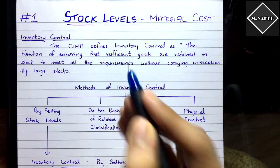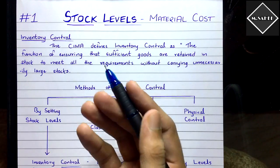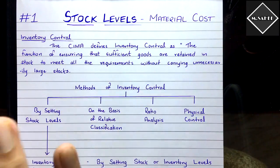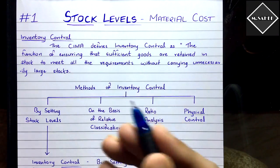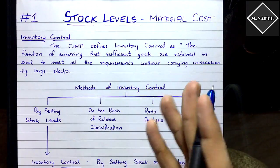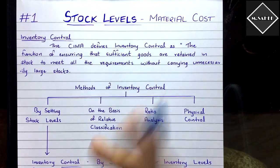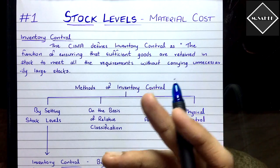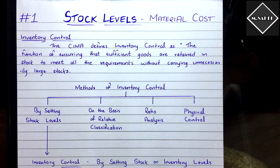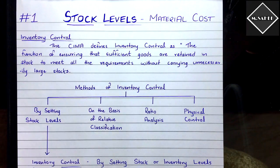We have to maintain sufficient stock so that our requirements are fulfilled — our production should run smoothly without interruption and without losing money. We can't maintain unnecessarily large stock, i.e., overstocking, because that incurs lots of cost and causes wastage. There should be a balance between sufficient stock and overstock — that's inventory control.